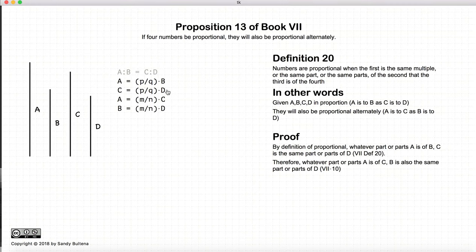By Proposition 10 of this book, we know that if A is the same fractions of B that C is of D, then we also know that if A is some fractions of C, then B is the same fractions of D.